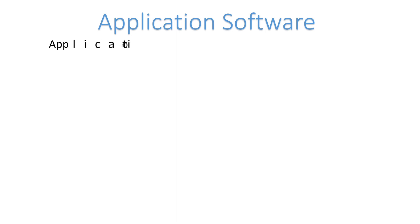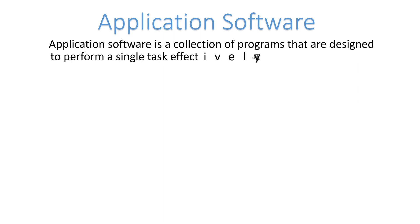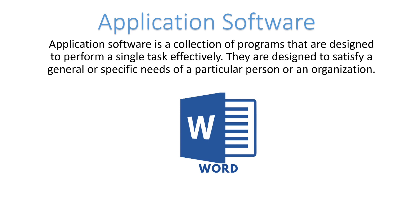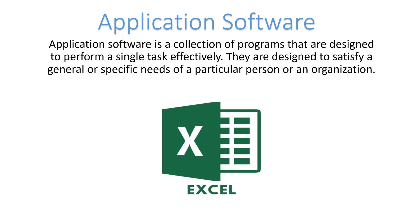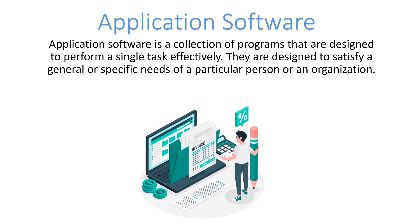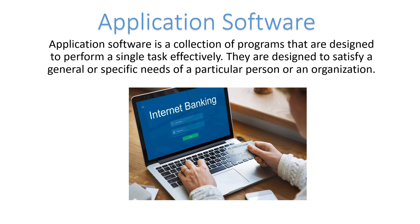Application software is the type of software designed to perform a special or single task only. They are designed to satisfy the general or specific needs of a particular person or organization. For example, MS Word is designed to prepare documents, Excel for maintaining numerical data or performing calculations, PowerPoint for creating presentations, and billing or banking software for their respective tasks.